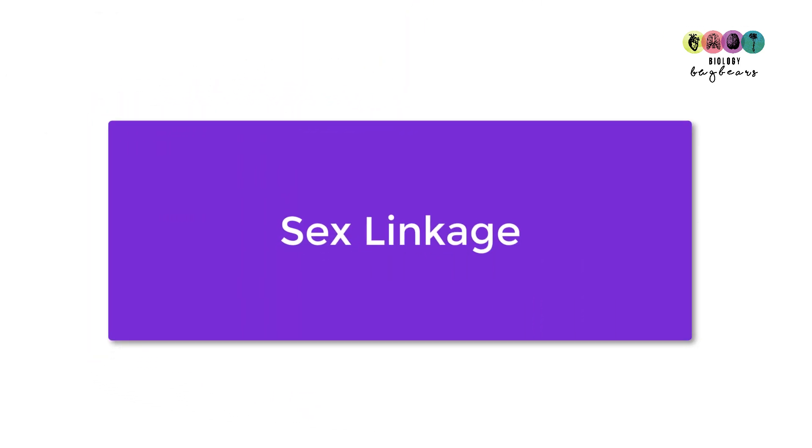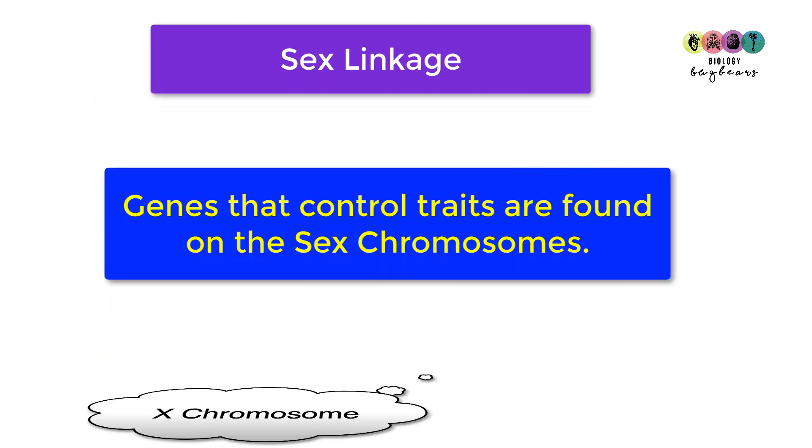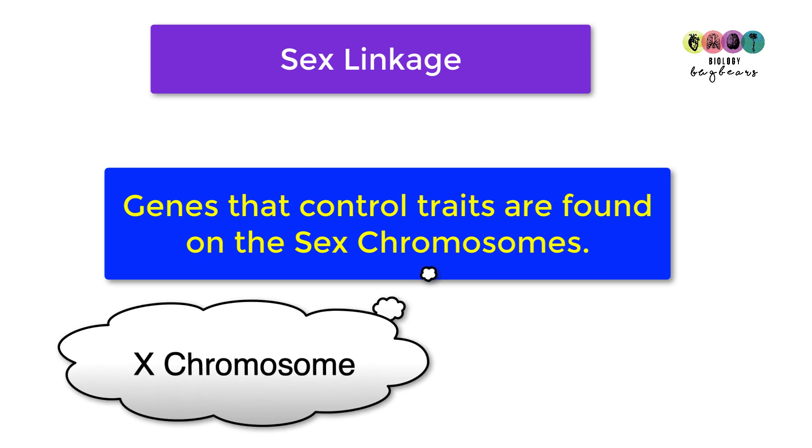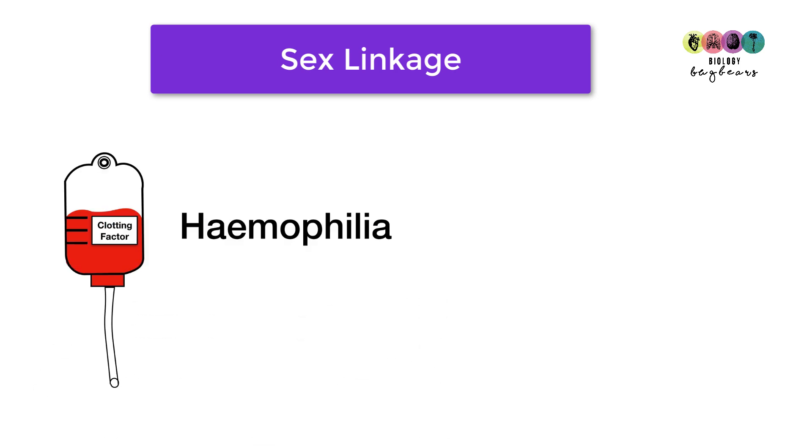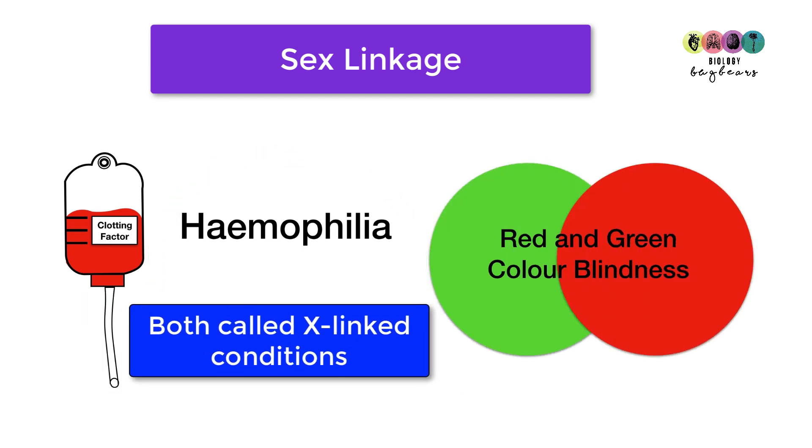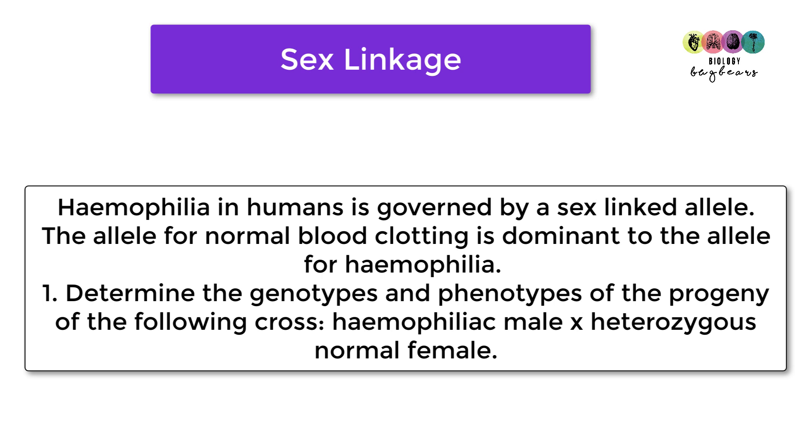Sex linkage is when the gene that controls a particular trait or condition is found on the sex chromosomes, the X chromosomes in particular. Two examples of sex-linked conditions or traits are hemophilia and red and green colour blindness. So as sex linkage comes up a lot, let's do a previous question.